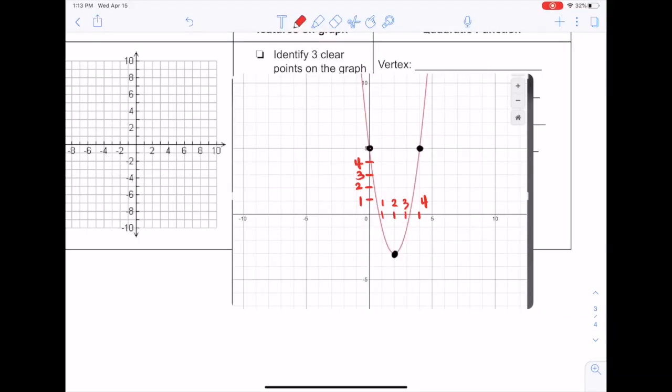So we know our key points. This is 2, negative 3, so 2, negative 3 is right here and that's one clear point. We see another clear point is right here which is 4, 5. 4, 5 is right here. Another one, 0, 5.